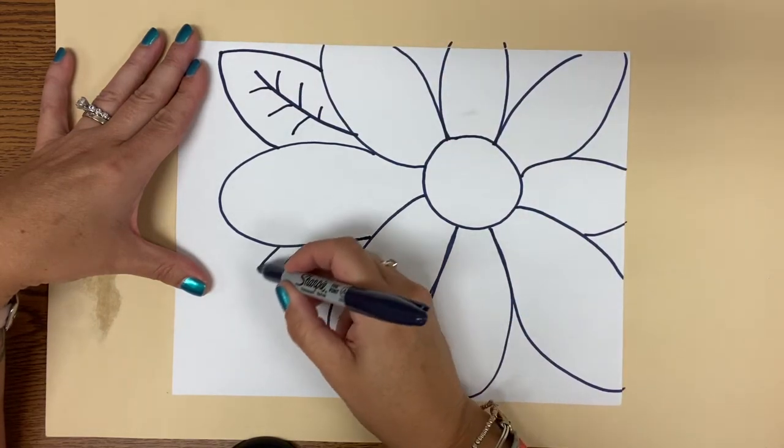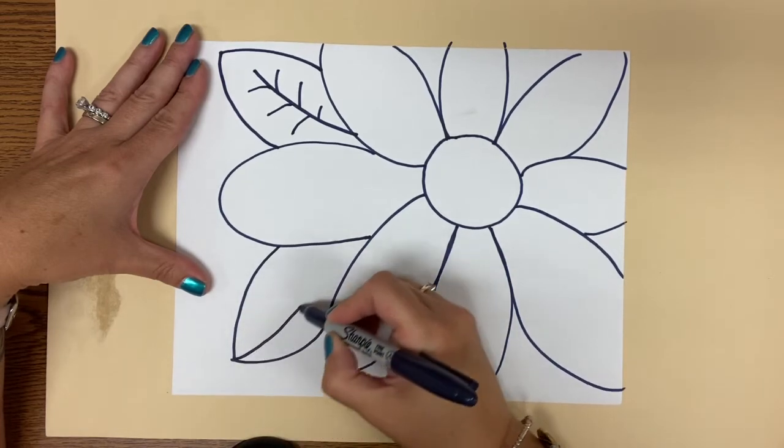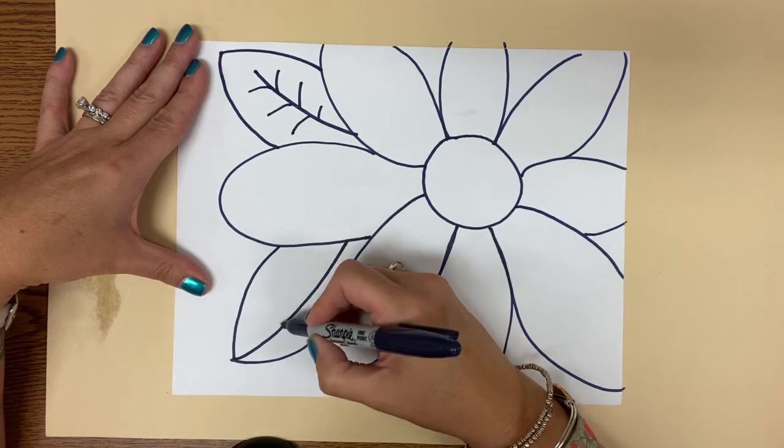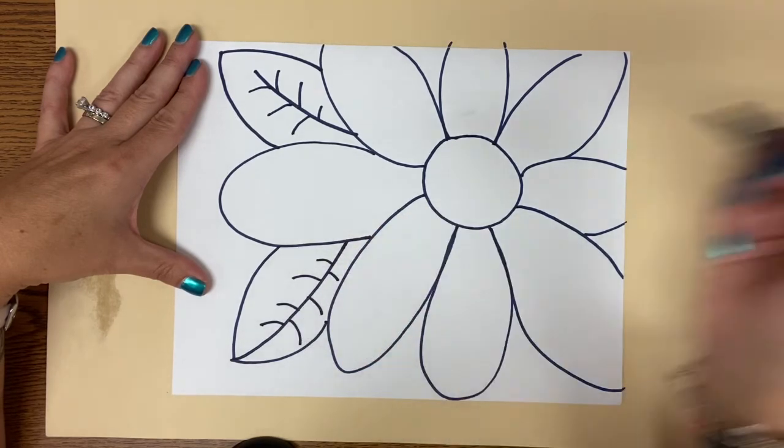And maybe I'll do another leaf over here to fill up some of that empty space. So again, two curved lines, a line down the middle, and then I'm going to draw the veins of the leaf.